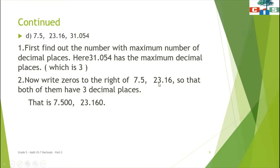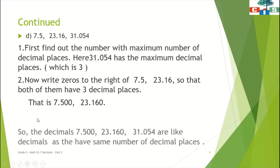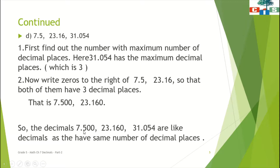In 23.16 we have 2 decimal places and we want 3 decimal places, so we need to just put one zero. So I have put 0 after 6, that is 23.160. We have converted these unlike decimals to like decimals. The final statement: 7.500, 23.160, and 31.054 are like decimals as they have the same number of decimal places.